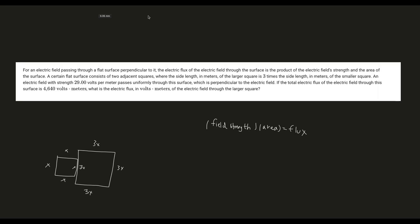Everyone, welcome back to another SAT math problem. This one is pretty interesting, more like reading comprehension than anything. Let's get right into it. It says for an electric field passing through a flat surface perpendicular to it, the electric flux of the electric field through the surface is the product of the electric field strength and the area of the surface.